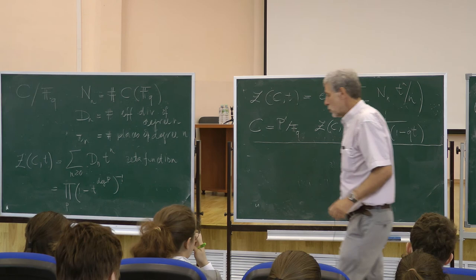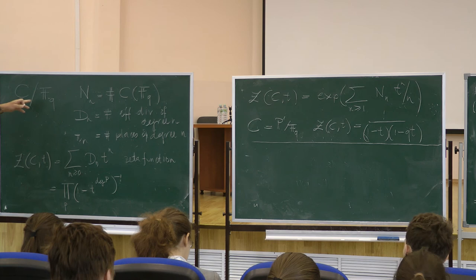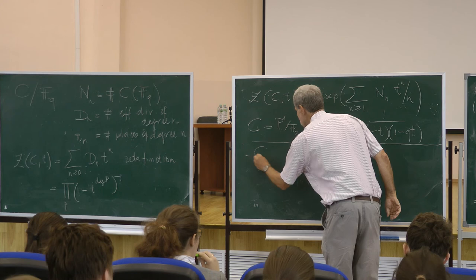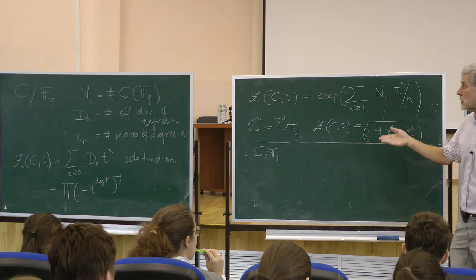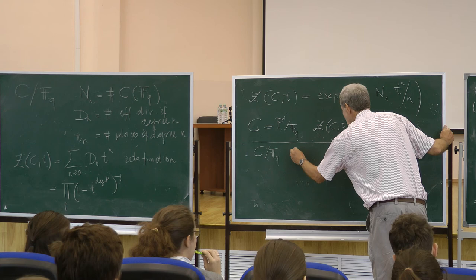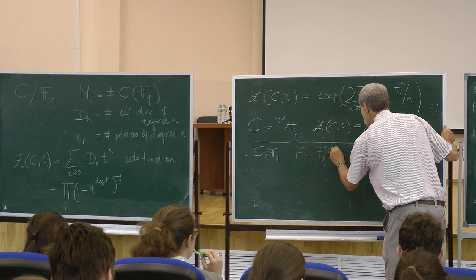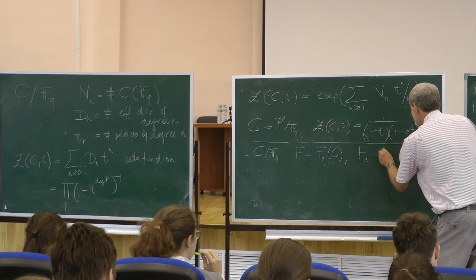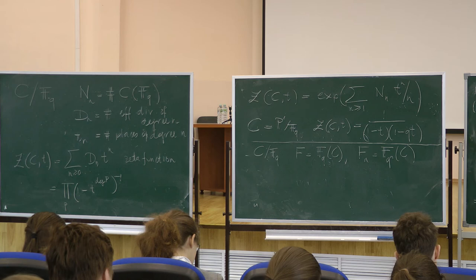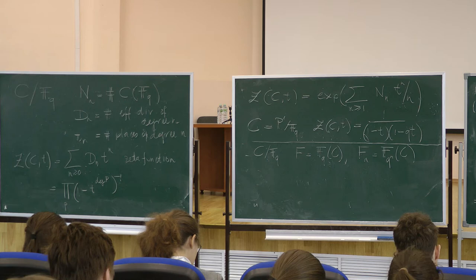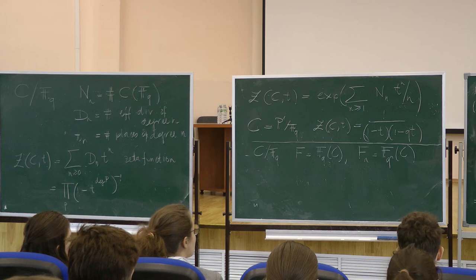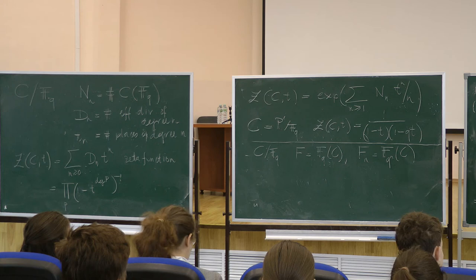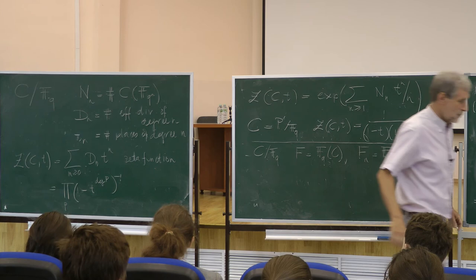For this we will look at the zeta function of the curve also over extension fields. We have our curve C defined over F_Q, but we can also consider it as a curve defined over extension fields. So if F is the function field of C over F_Q, then we have a function field F_N, which is the field obtained by allowing as constants all elements from F_{Q^N}. A student asked a question and a small mistake was corrected.